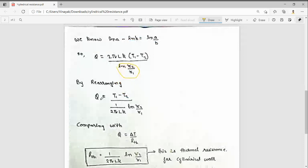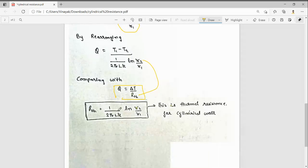By rearranging once again, Q equals (T1 - T2) divided by (1/(2πKL) ln(R2/R1)). By comparing this equation with the electrical analogy, we get Rth equals 1/(2πKL) ln(R2/R1). This is the thermal resistance for cylindrical work.